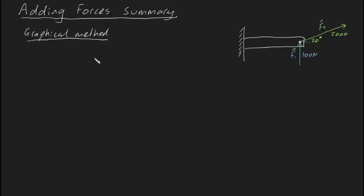Graphical method. Now with the graphical method to find your resultant force vector, what you do is you sum these forces up by putting them on top of each other head to tail. So let me show you what I mean.